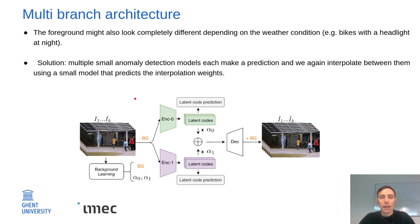The second aspect is the multi-branch architecture. We have multiple small anomaly detection models — multiple identical anomaly detection models but with different weights. We activate different branches depending on the weather condition.